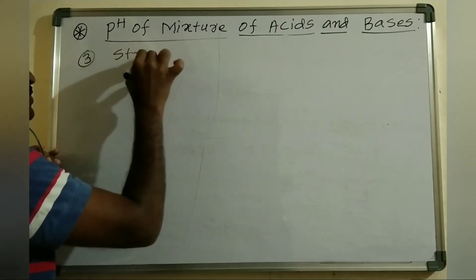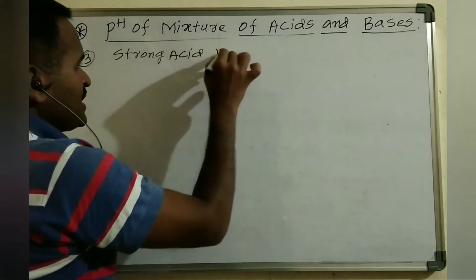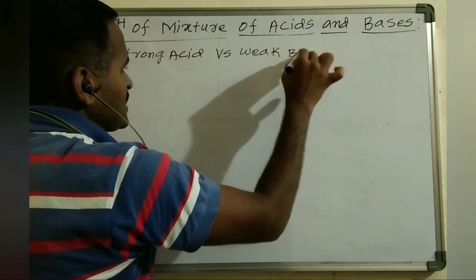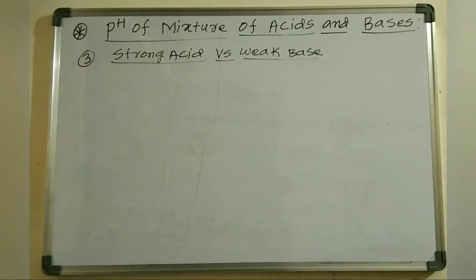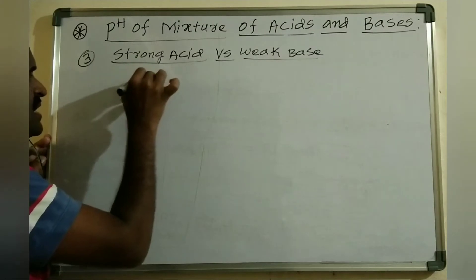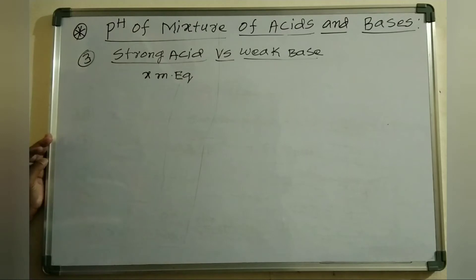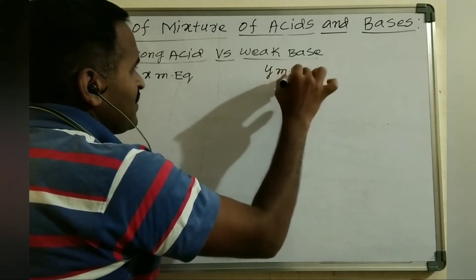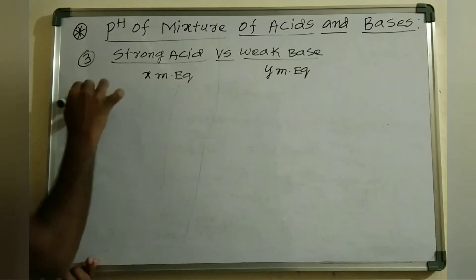For strong acid versus weak base: consider X as the milliequivalents of a strong acid and Y as the milliequivalents of a weak base. There are three situations that arise here.